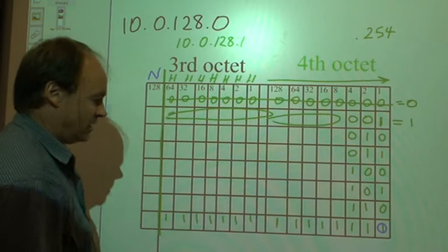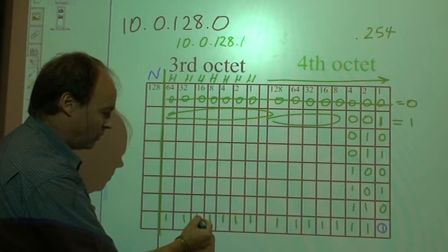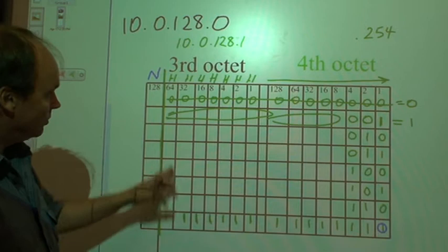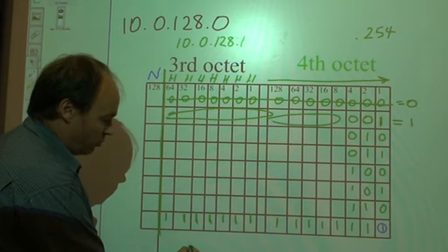But what happens in the third octet is a very important focus here, that we have one, one, one, one, one, one, one. That adds up to, when we add 64, 32, 16, 8, 4, 2 and 1, we get a value of 127.